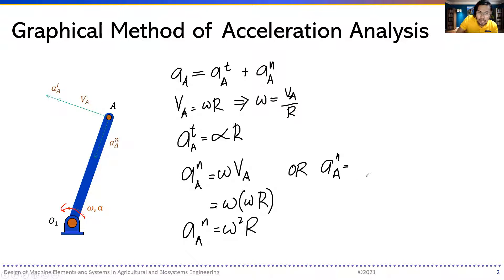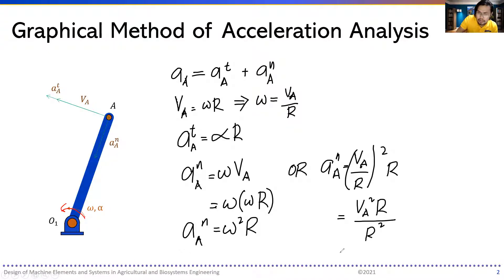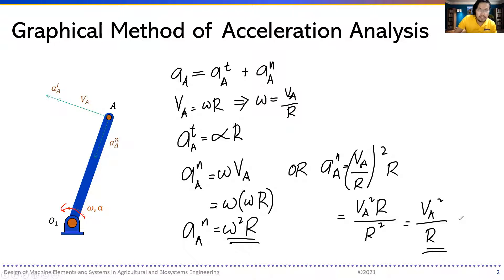The normal acceleration can also be expressed as Va squared over r — derived by substituting Va = ω·r. Both equations can be used to determine the normal acceleration. The final acceleration is the vector sum of these components — these are vectorial quantities. This is the analytical solution, though at some points the graphical method is also required.